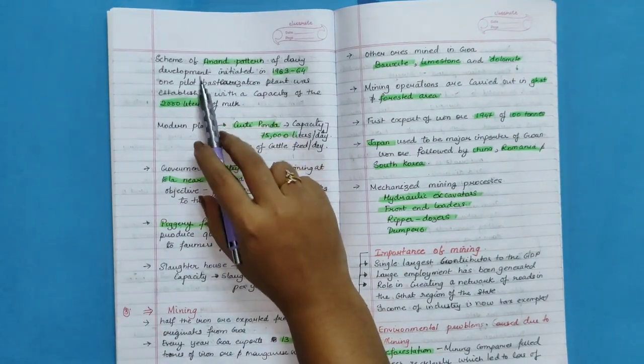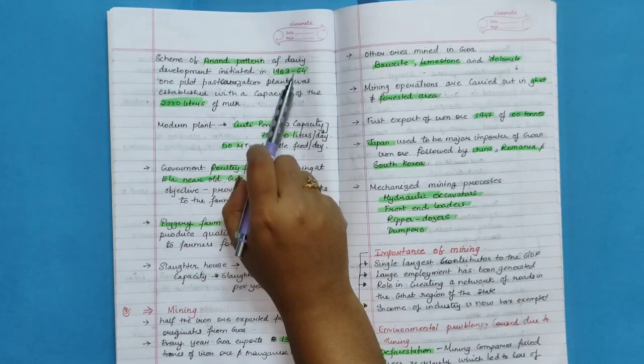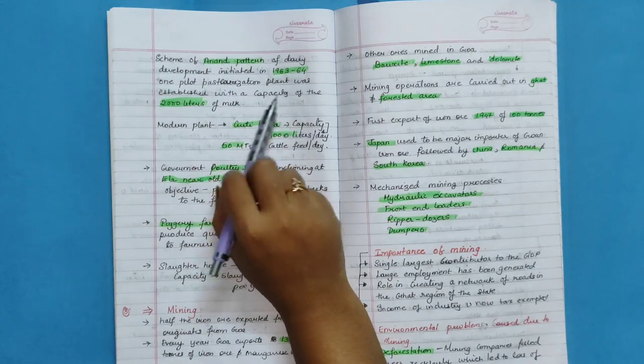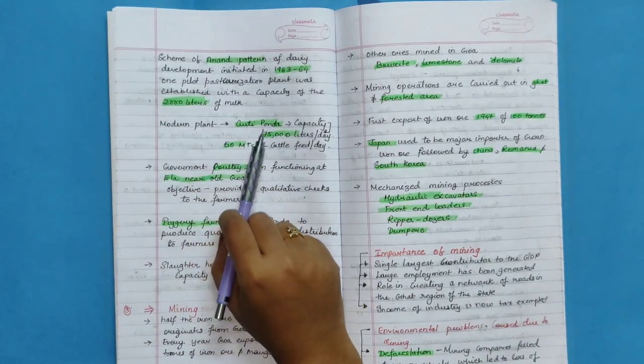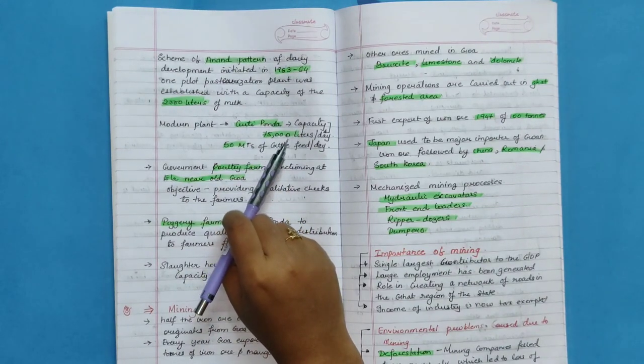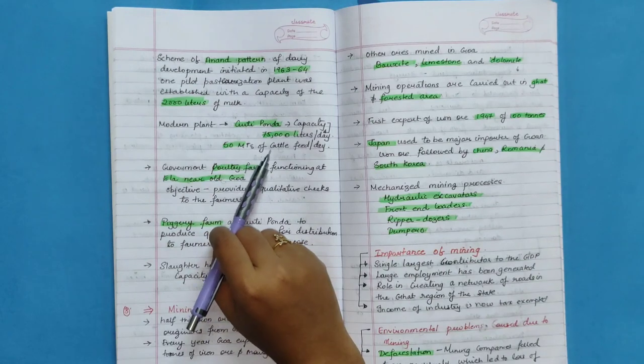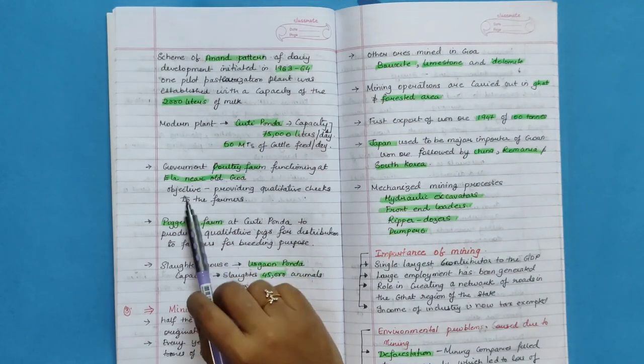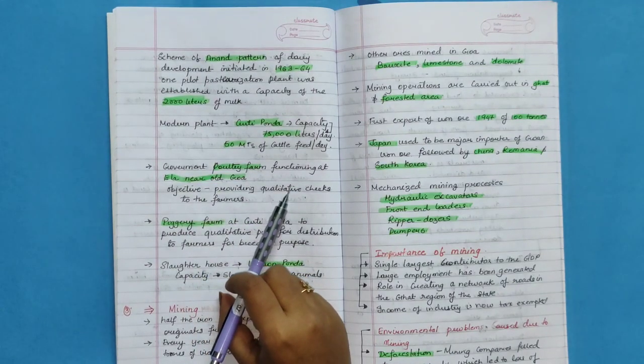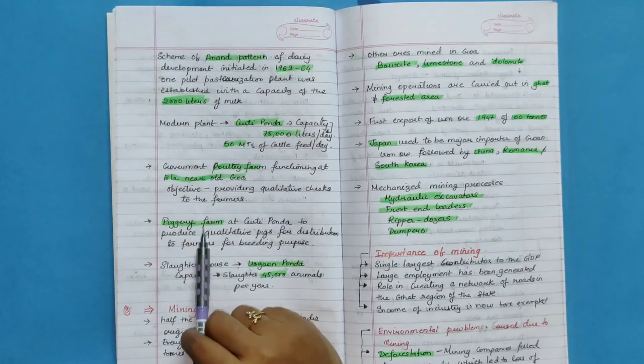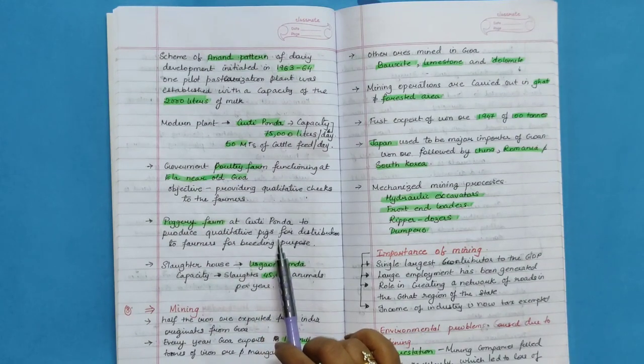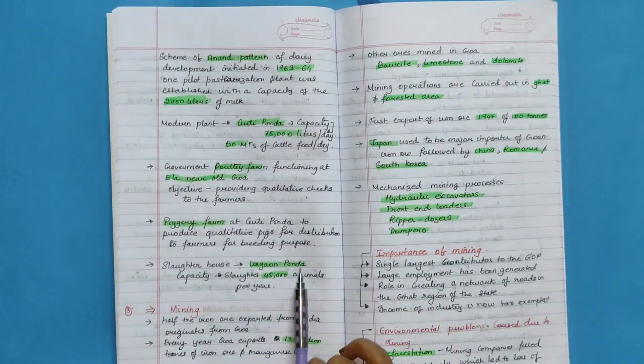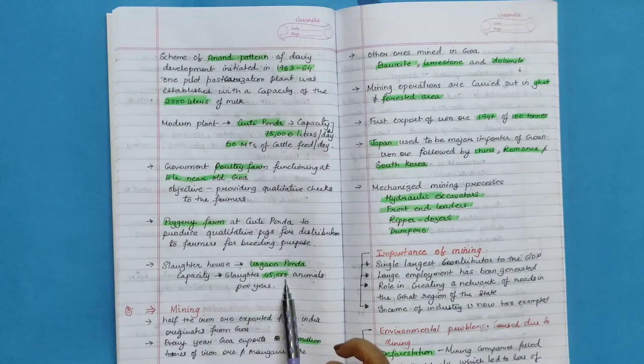Schemes of Amul pattern of dairy development initiated in 1963-64. One pilot pasteurization plant was established with a capacity of 2,000 liters of milk. Modern plant at Curti Ponda, the capacity is 75,000 liters per day and 50 tons of cattle feed per day. Government poultry farm functioning at Ella, Old Goa. Objective is providing qualitative chicks to the farms. Piggery farm at Curti Ponda to produce qualitative pigs for distribution to farmers for breeding purpose. Slaughter house at Usgao Ponda, capacity is slaughtered 45,000 animals per year.